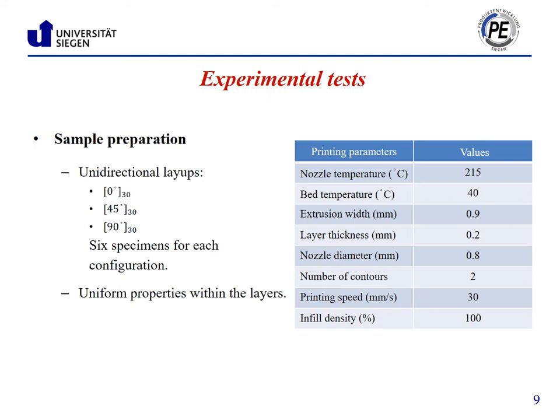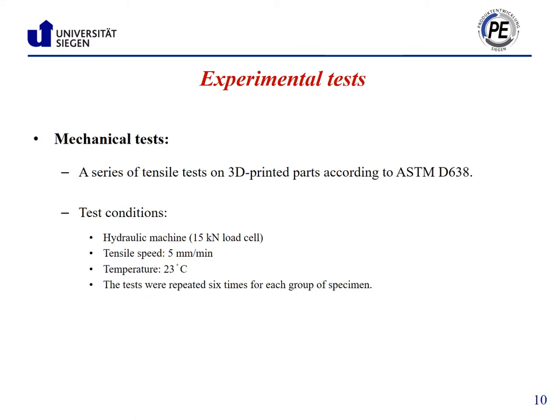In this study, we printed 6 specimens for each configuration, and there are uniform properties within the layer. After the printing process, the specimens were kept at room temperature for one day, and then we conducted tensile tests on both groups of intact and defected specimens. For the tensile tests, we used a hydraulic machine equipped with a 15 kilonewton load cell, and all tests were carried out at a rate of 5 millimeter per minute ramp speed.